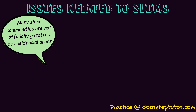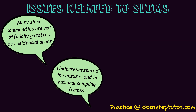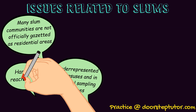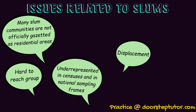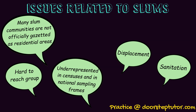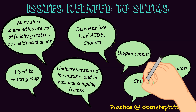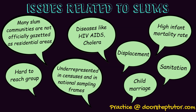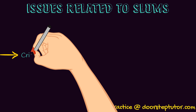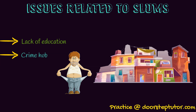Many slum communities are not officially gazetted as residential areas, so they remain underrepresented or unrepresented in the census and in other national sampling. They are hard-to-reach groups and are often victims of displacement when new development or infrastructure programs arise. There are various problems related to sanitation and hygiene, and residents often fall ill from waterborne diseases like cholera. There is also a big problem of lack of education, child marriage, high infant mortality due to malnutrition, and slums are also a hub of crime as people unable to find employment turn to criminal activities.